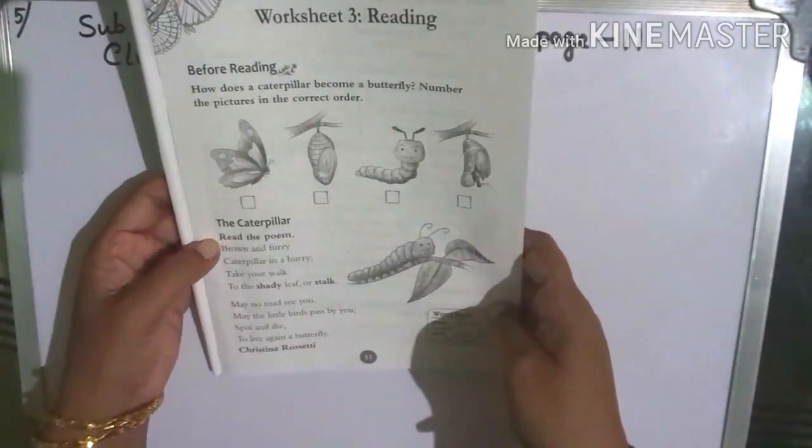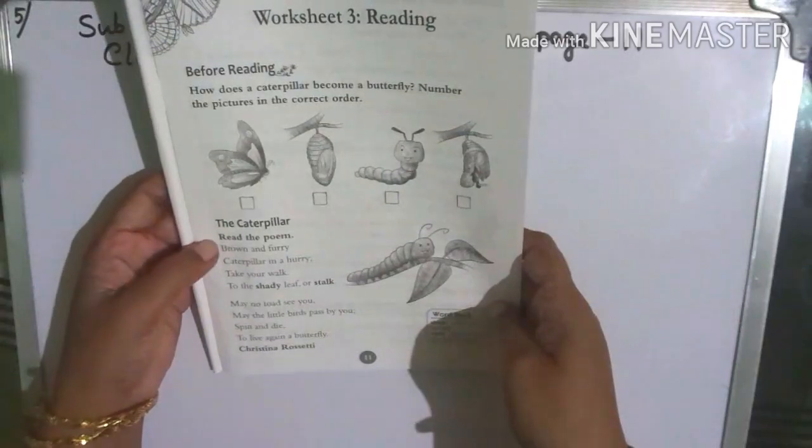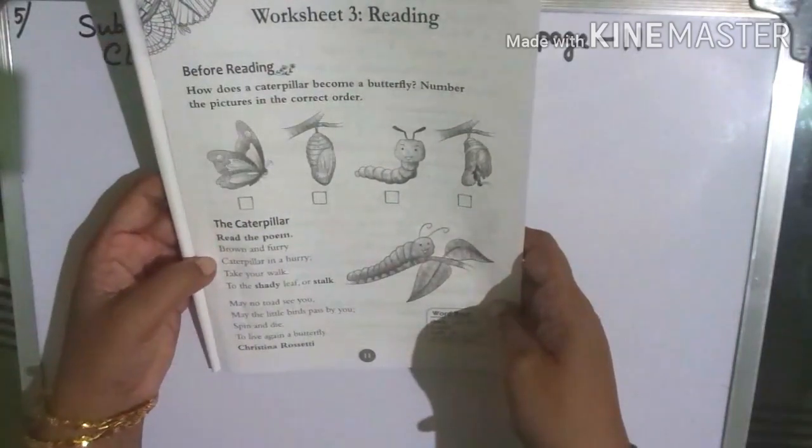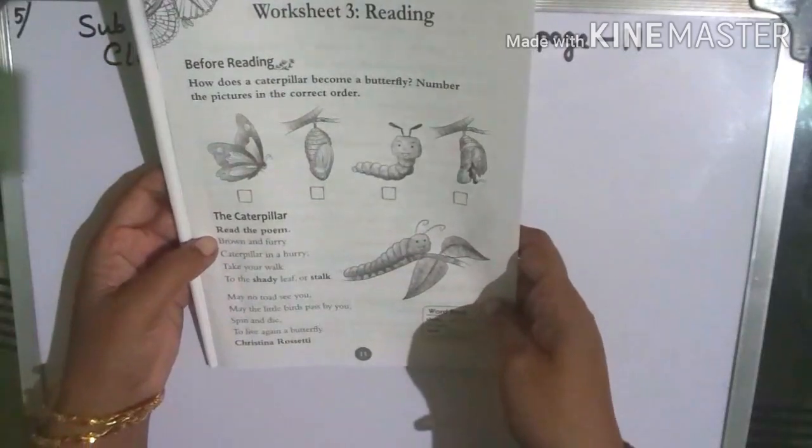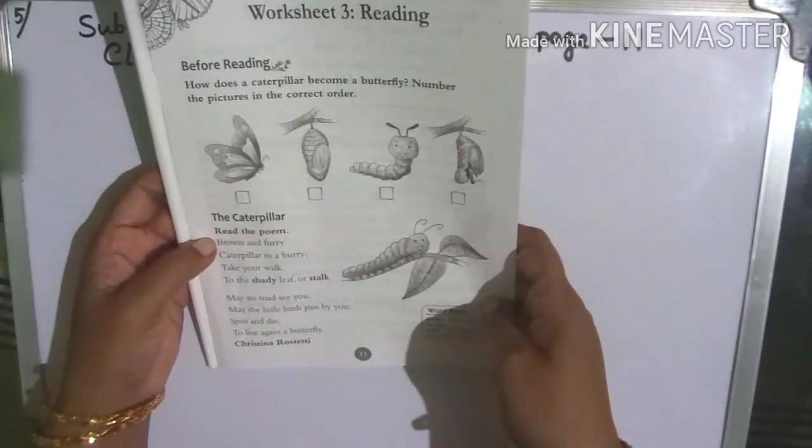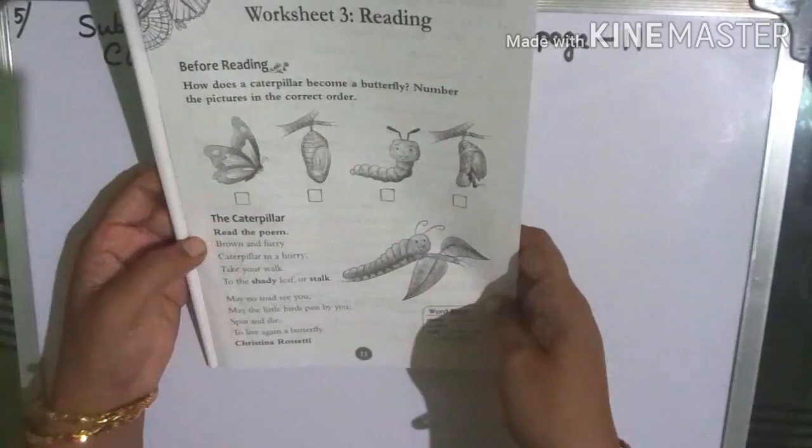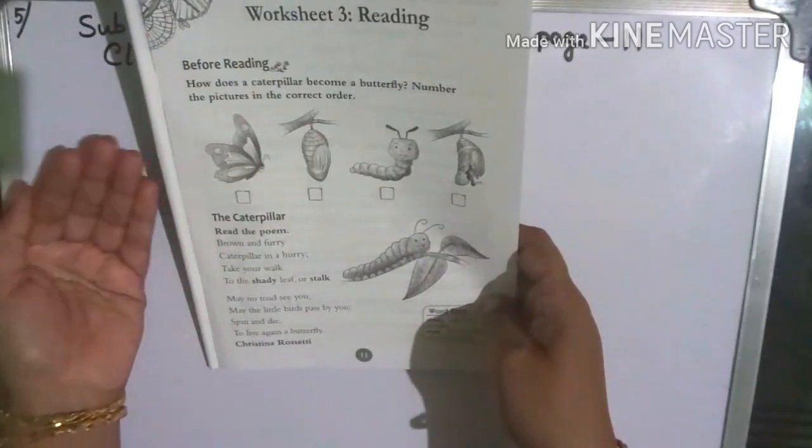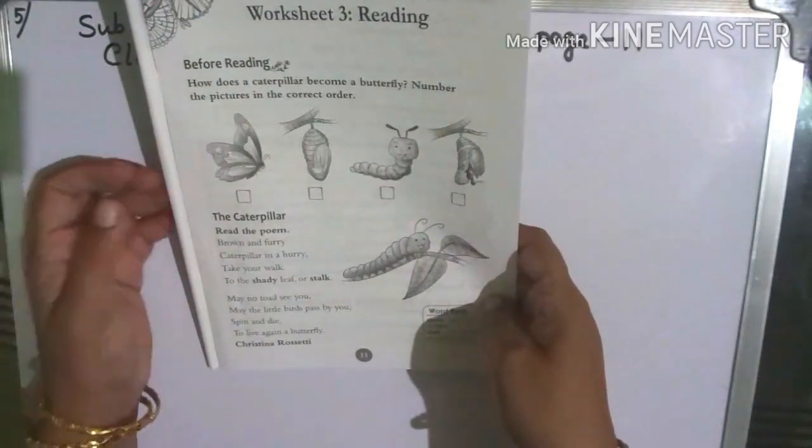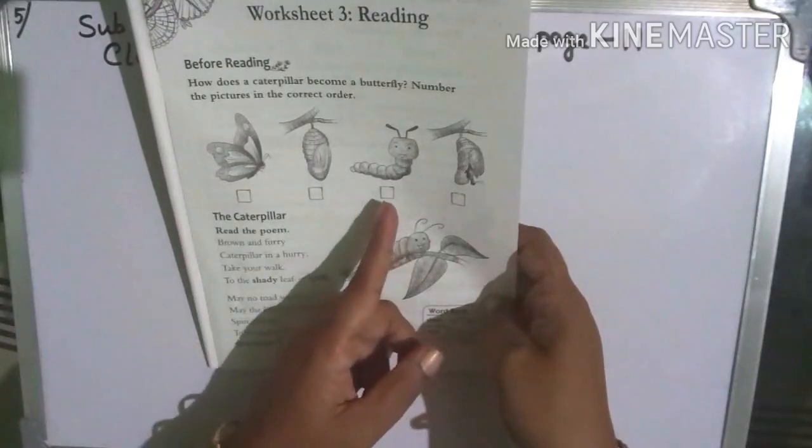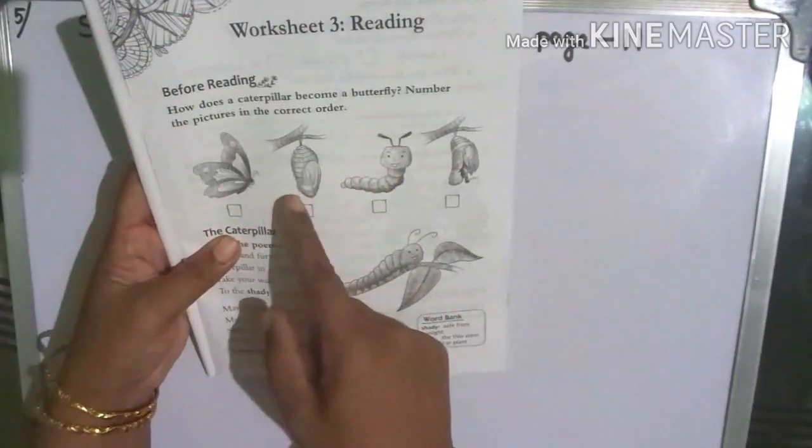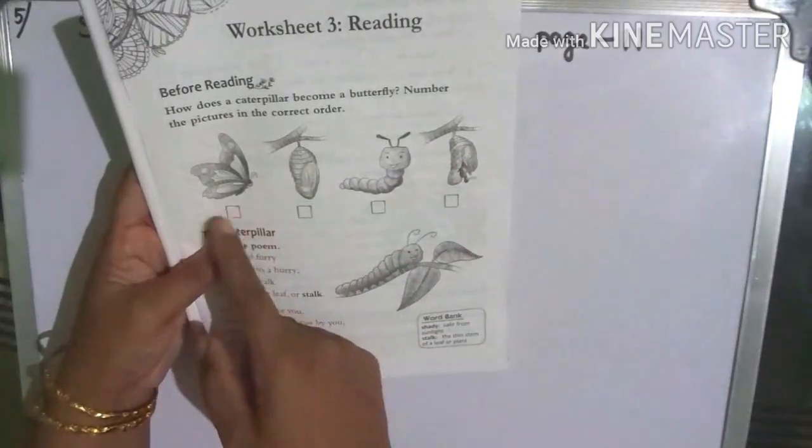Again children, I am going to explain it to you so you can understand it. The caterpillar... the first step, second, third and last.